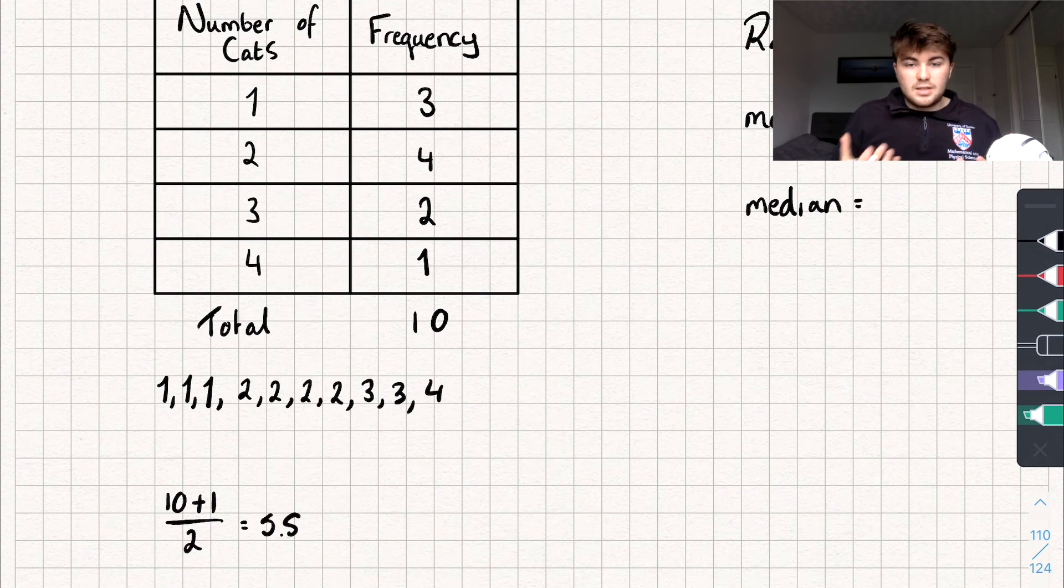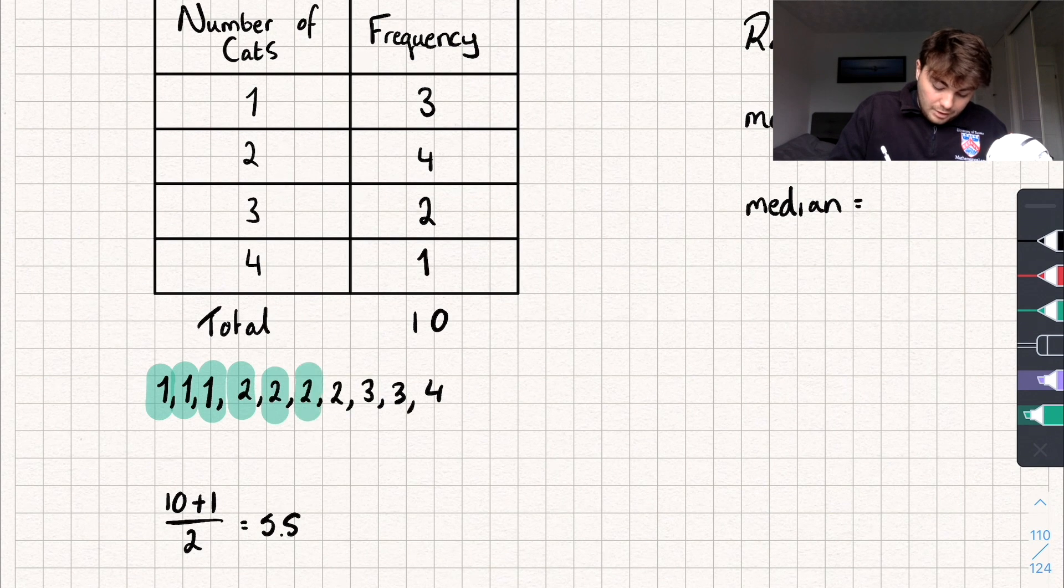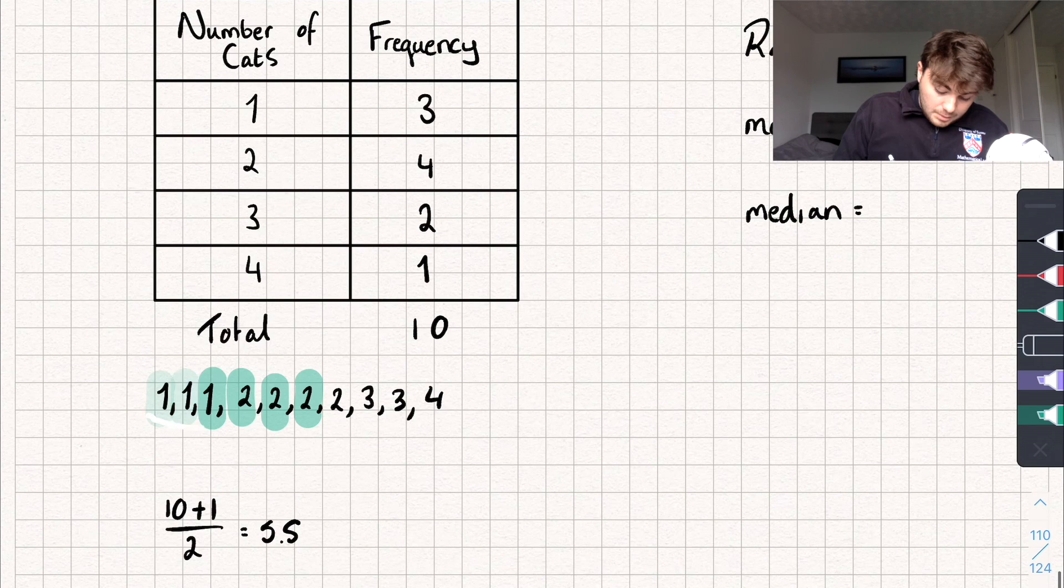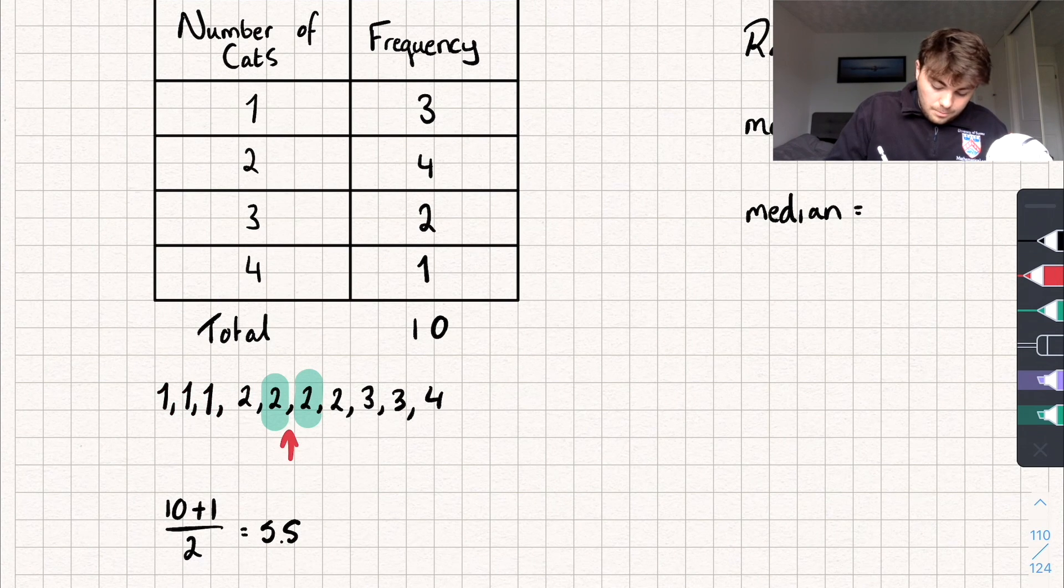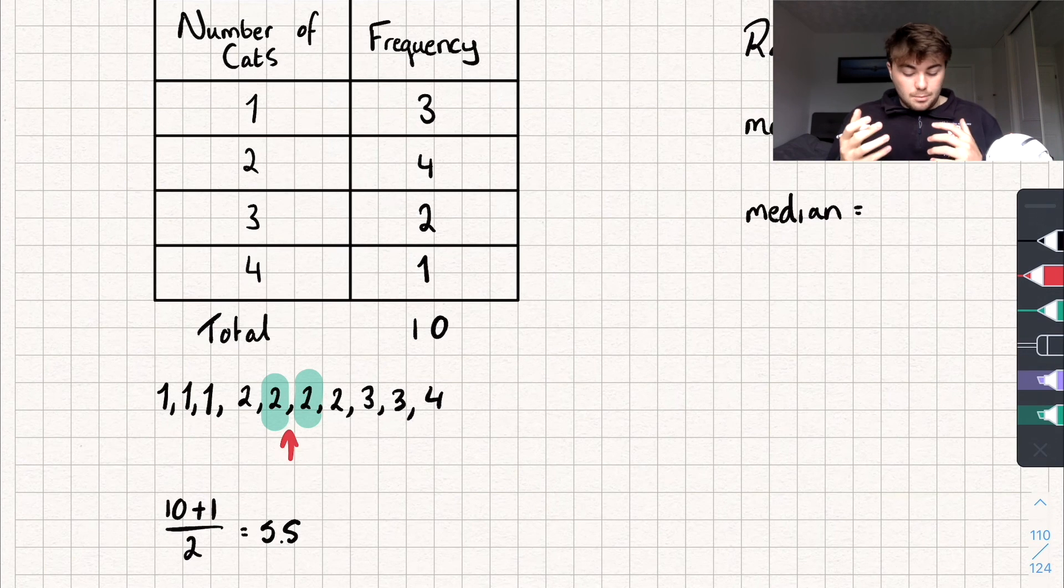So let's look at the list first. You can see we've got 1, 2, 3, 4, 5, 6. Well we want the one that's between the 5 and 6 data value. So what's between 2 and 2? Well it's just going to be 2 isn't it? So our median is going to be 2.